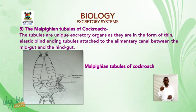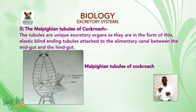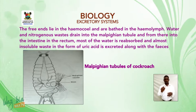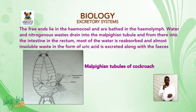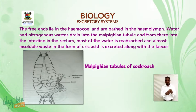The Malpighian tubules of the cockroach are unique excretory organs in the form of thin elastic blind-ending tubules attached to the alimentary canal between the midgut and the hindgut. The free ends lie in the haemocoel and are bathed in haemolymph. Water and nitrogenous waste drain into the Malpighian tubules and from there into the intestine. In the rectum, most water is reabsorbed and almost insoluble uric acid is excreted along with the faeces.